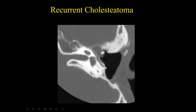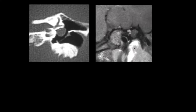Here's an example of a patient who has undergone a canal wall down mastoidectomy. We can see the head of the malleus and a soft tissue mass located anteriorly. Based on this alone it's hard to say whether this is recurrent cholesteatoma, but given it's a canal wall down — which indicates extensive disease — and this is distal to the manubrium of the malleus in a surgically difficult location, I'm more inclined to think this was recurrent cholesteatoma. And indeed it was.